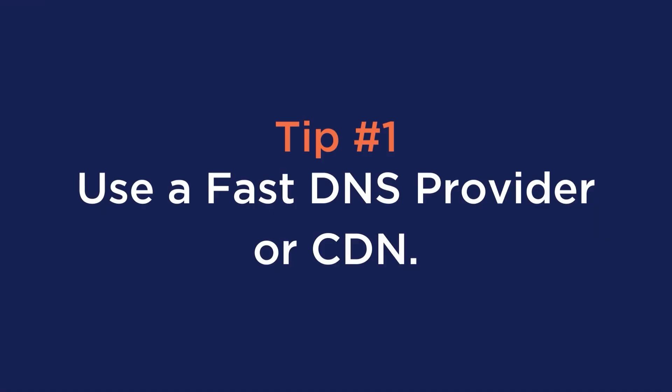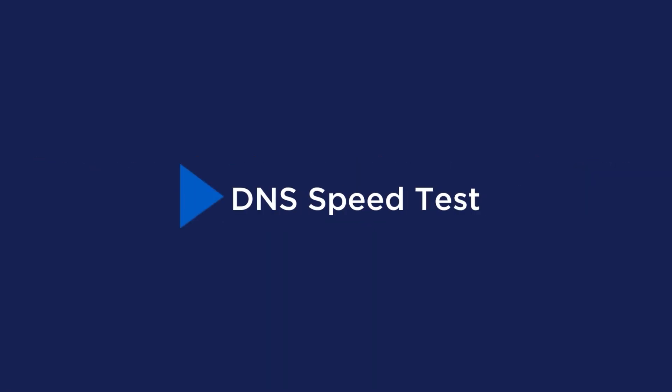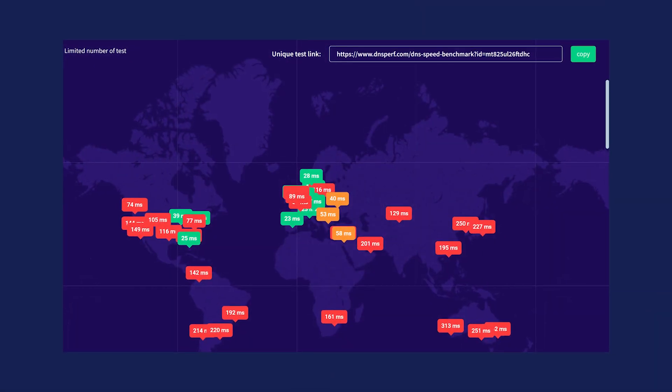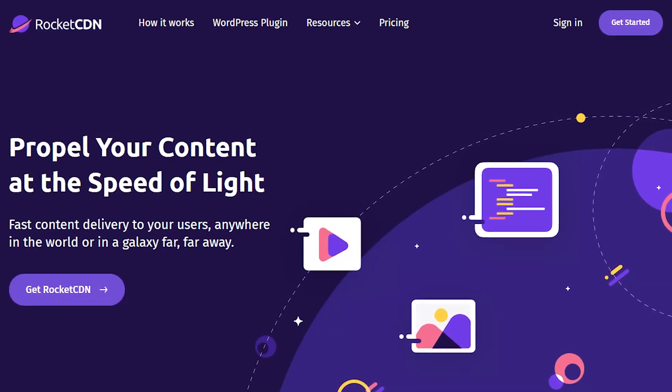Number one is to use a fast DNS provider or a CDN. DNS providing is just like hosting — while several providers are available, not all of them work the same. If you find a more reliable DNS provider, you can switch to reduce your DNS lookups. You can check providers' speed using tools like DNS Perf, DNS Speed Benchmark, or DNS Speed Test. You can also reduce DNS lookups by using a reliable Content Delivery Network. A CDN uses a cluster of high-performance servers rather than just one. For a CDN, we'd recommend using Rocket CDN.